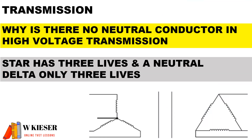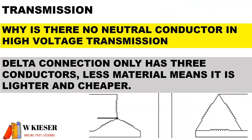Why is there no neutral conductor in high voltage transmission? On the transmission side, you'll notice that the primary star has three lives and a neutral, whereas delta only has three lives. Because the delta connection only has three conductors, it means less material, it is lighter and also cheaper. So we always find that for the transmission, we have delta on the secondary side.